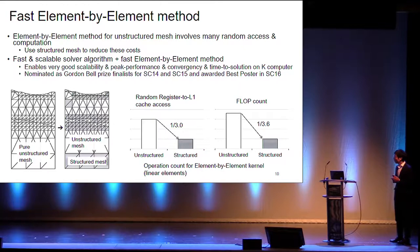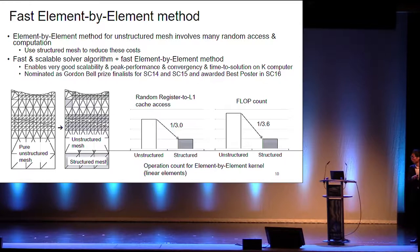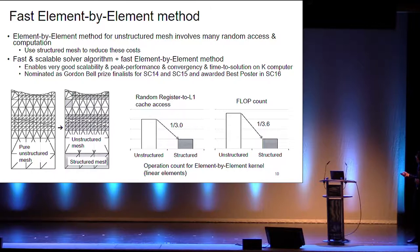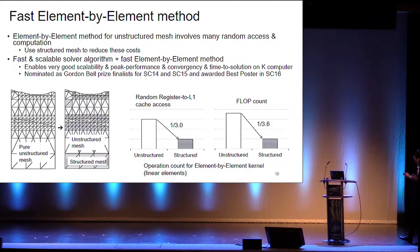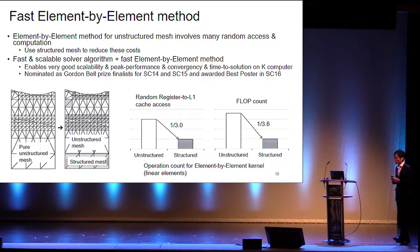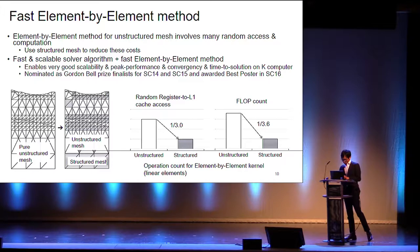We use a hybrid mesh of structured and unstructured mesh. In a normal solver, we use a pure unstructured mesh for the whole domain including homogeneous and inhomogeneous parts. What we did is model the homogeneous parts with structured mesh and the complex parts with unstructured mesh. By using structured mesh, we reduce the number of data accesses — this is register and L1 cache access — and also the floating point operation counts. Using this fast and scalable solver algorithm with the fast element-by-element method, we achieved good scalability, peak performance, and convergency on the K-computer, nominated for Gordon Bell finalist in 2014 and 2015, and best poster in 2016.